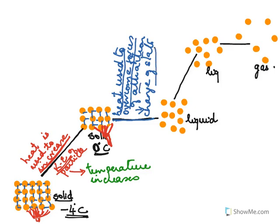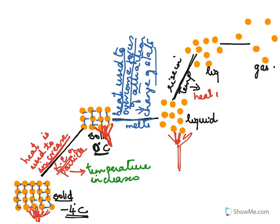Once all the solid melts, we again supply heat. In this region again there is a rise in temperature, because the heat is now used to increase the kinetic energy of the particles. The temperature rises from 0 degrees Celsius back up to 100 degrees Celsius.